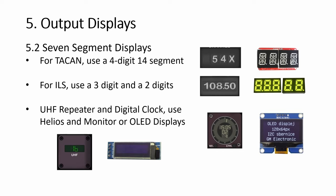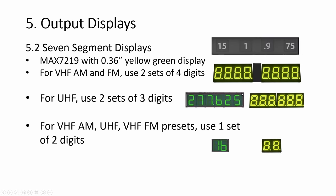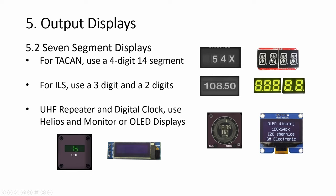More complex ones will be things like 14-segment displays — I believe the HT16K33 is quite a bit bigger than the 0.36 inch. For ILS you can use a three-digit and a two-digit combination because the total is five. There are also OLED displays in rectangular, square, and other shapes.